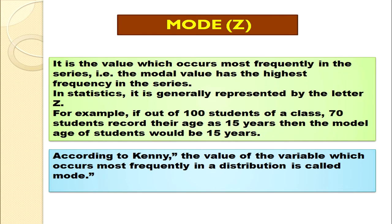Now, what is the mode? Mode is the value which occurs most frequently in the series — the modal value has the highest frequency. Mode is denoted by Z. For example, if out of 100 students, 70 students record their age as 15 years, then the modal age would be 15 years. According to Kenny, the value of the variable which occurs most frequently in a distribution is called mode.